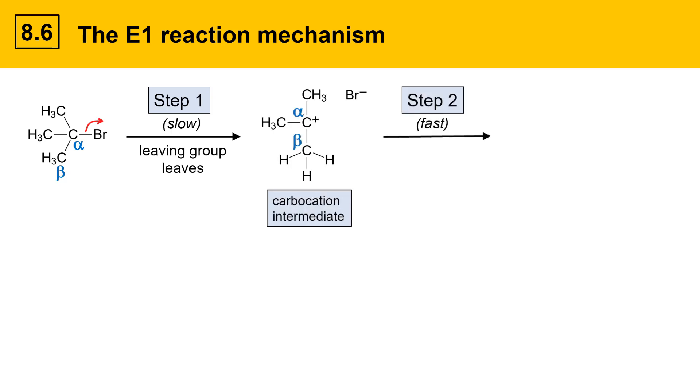The carbocation intermediate then reacts in a second fast step with a weak base. Here the base deprotonates the beta position, which gives a double bond between the alpha and the beta positions. The resulting product is an alkene that has a double bond between the alpha and beta carbons along with a conjugate acid and the leaving group.